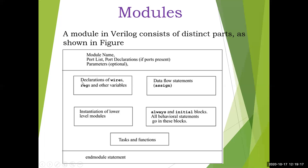And finally comes the end module statement. So in this whole program what you are writing is 'module', module name, and then 'end module' - this is the compulsory part. Remaining all components may be present or may not be present - they are optional. So these are the components of a Verilog module - an important diagram to remember.